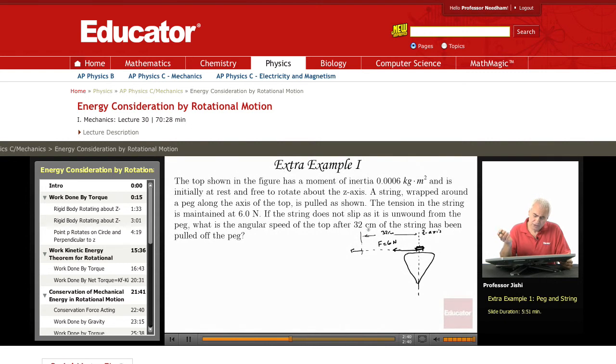The work done, since you're pulling at a constant force, is the force times the displacement. You're applying a force, and the point of application of the force moves 32 centimeters. So the work done by the force is simply the force times that distance—the force is 6 newtons and the distance is 0.32 meters.